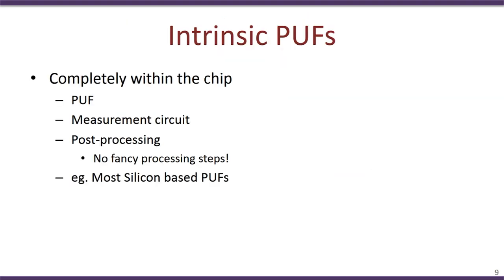As mentioned, many PUFs have been proposed over the last 15 to 20 years. The type of PUFs commonly used today are known as intrinsic PUFs — PUFs that can be completely implemented within a single chip, including the PUF function itself, the measurement circuit to measure the response, and post-processing, all within that single chip. In this video lecture, we will look at two of the most common PUFs evaluated and used today: the arbiter PUF and the ring oscillator PUF.